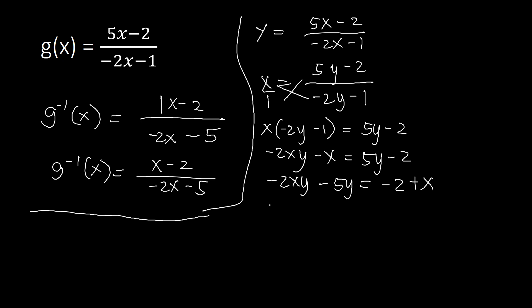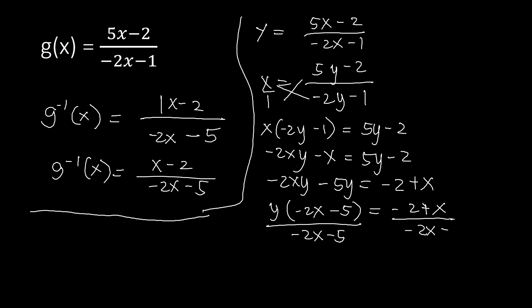Factor out y: y times (negative 2x minus 5) equals negative 2 plus x. Divide both sides by (negative 2x minus 5) to isolate y. So y equals negative 2 plus x over negative 2x minus 5, which gives us g inverse of x equal to x minus 2 over negative 2x minus 5.